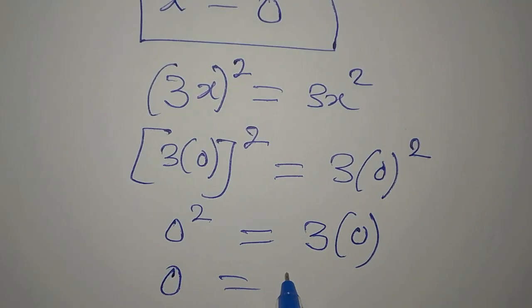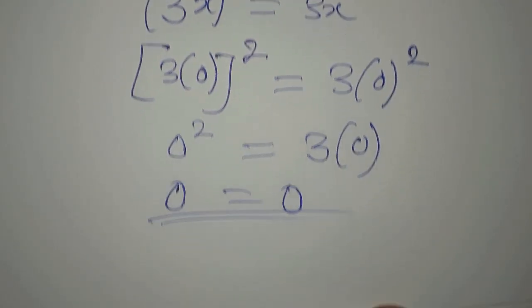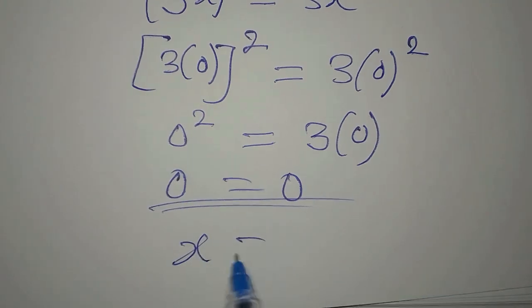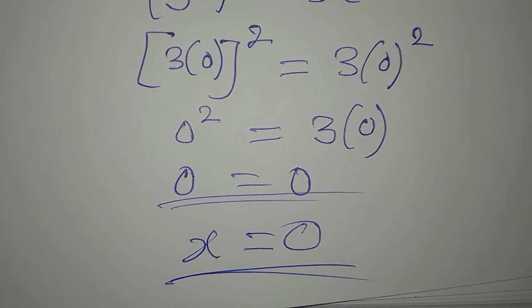And here we have 3 times zero to be zero. So this means that we are very correct to say that the value of x is equal to zero. Thank you for watching.